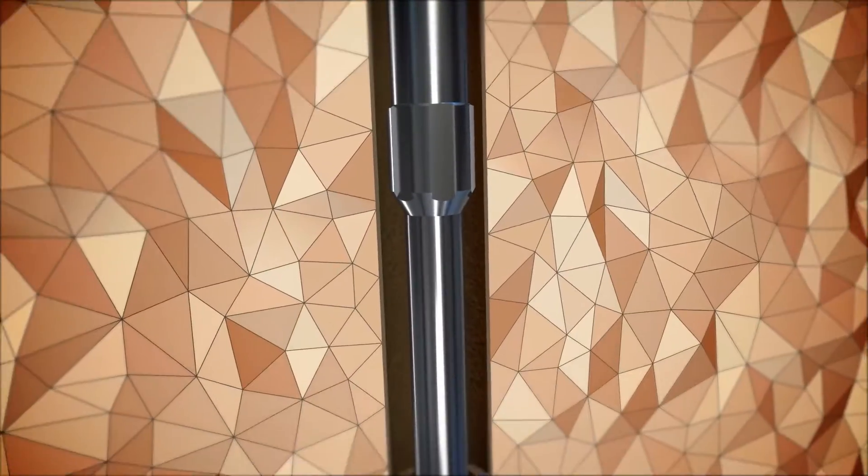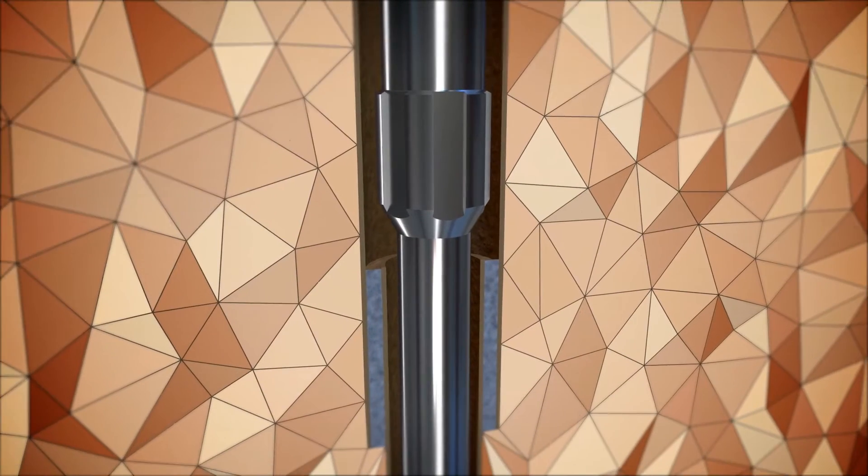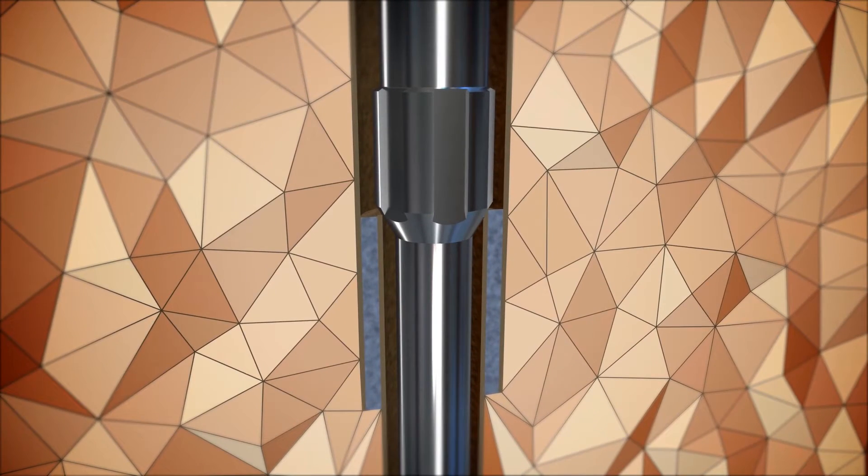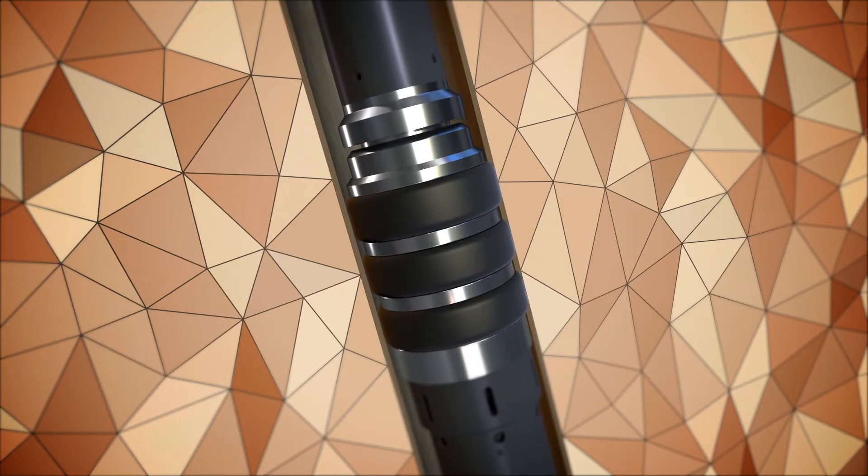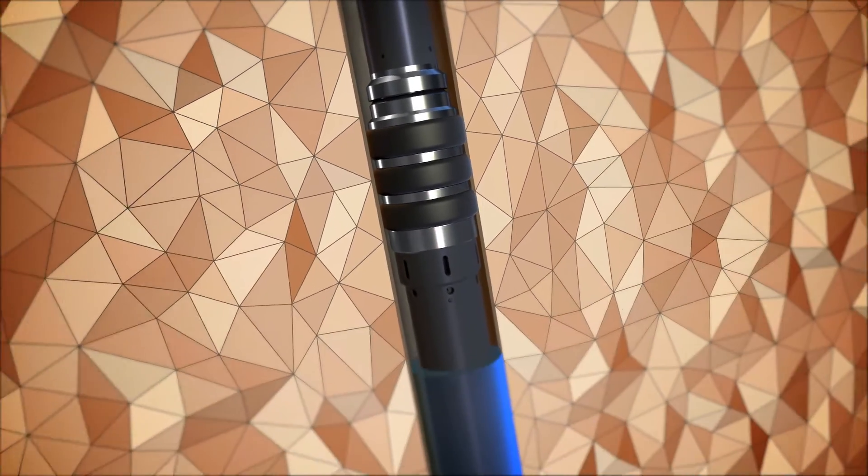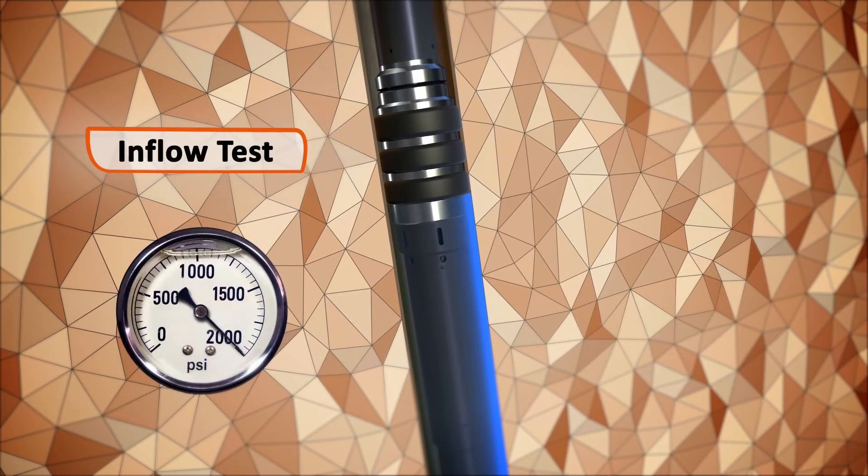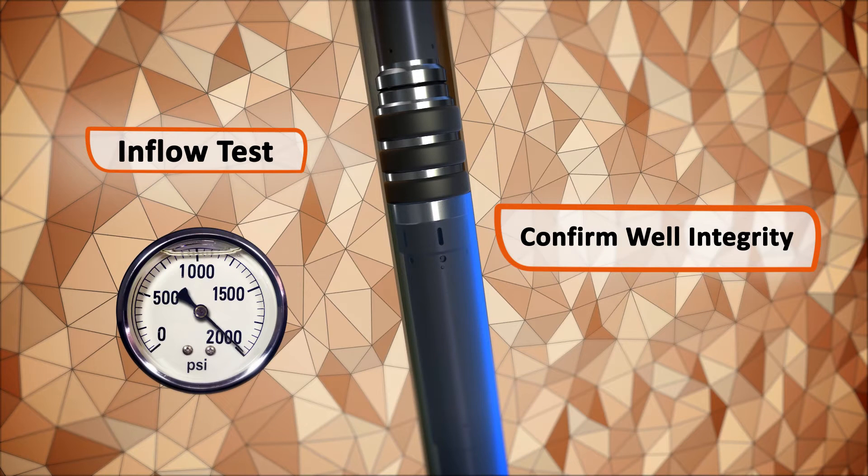The liner top mill is landed out onto the liner top and weight is applied to function the liner top test tool. An inflow test can then be conducted to confirm well integrity.